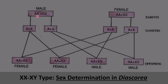In Dioscorea, the autosomal number can differ from 20 to 60 depending on the species. The male has the XO type of sex chromosomes and the female has XX sex chromosomes. As a result, the male produces two different types of pollen and the female produces a single type of egg. When X-type pollen fertilizes the egg, female progenies are formed; when O-type pollen fertilizes the egg, male progenies result. This is sex determination in Dioscorea, summarizing the three types of sex determination in plants.